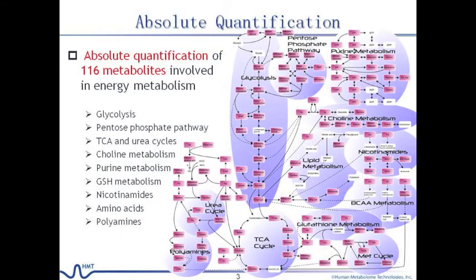Target metabolites in Carcinoscope were carefully selected based on their importance in energy metabolism and their frequency in journal articles focusing on cancer metabolism. Glycolytic and pentose phosphate pathway intermediates are of particular importance in order to trace the Warburg effect, which indicates cancer cells' predominant use of glycolysis over oxidative phosphorylation for energy production, independent of oxygen availability. Other target metabolites include TCA and urea-cycle intermediates, amino acids, glutathione, nucleotides, and polyamines.